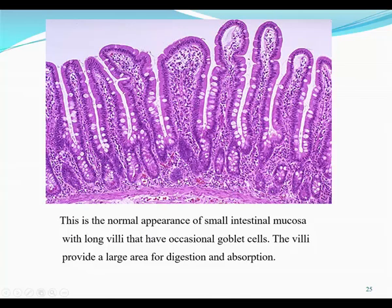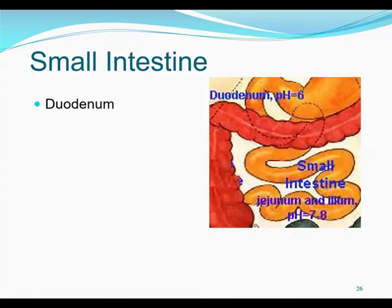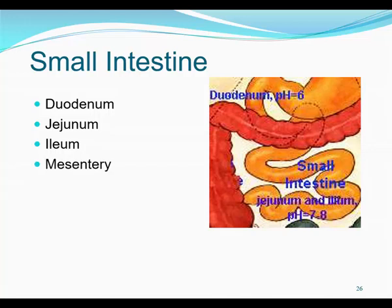The small intestine is up to 20 feet long in a cadaver. It has three sections: the duodenum, the jejunum, and the ileum. The duodenum is the first part, about 10 inches long. Then the middle part is the jejunum, and finally the ileum. It's held together by a system of membranes and blood vessels called the mesentery. Over top of the entire intestinal system is a layer of fat in a membrane called the greater omentum.